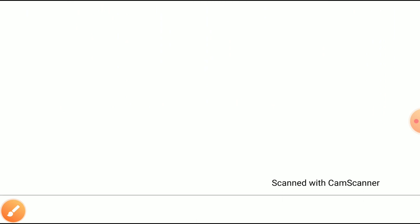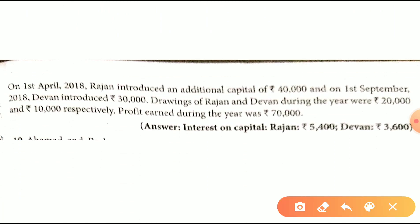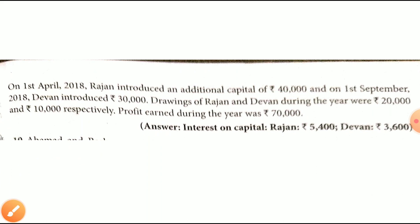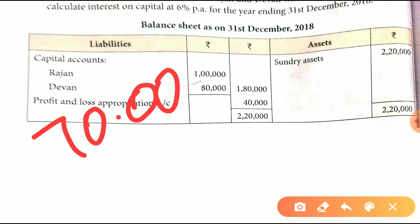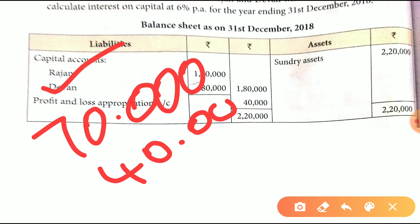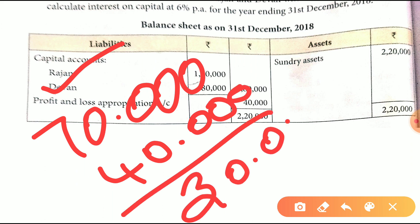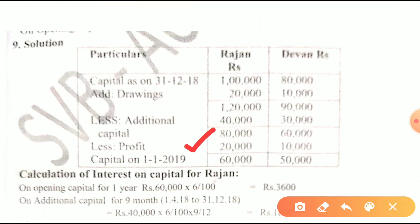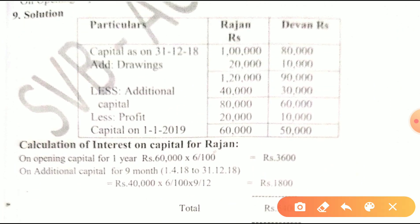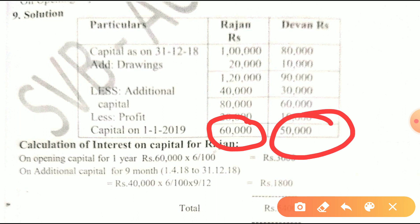We will add the drawings: Rajan's drawing is 20,000 and Devan's is 10,000. Now we will add the additional capital: Rajan's is 40,000 and Devan's is 30,000. We will add the profit of 70,000. So we get the closing capital: Rajan's is 60,000 and Devan's is 50,000 after adjustments for drawings and profit.